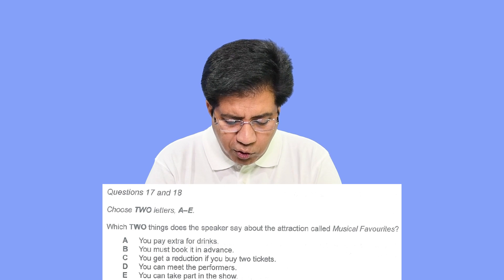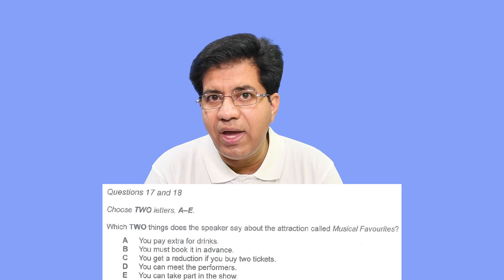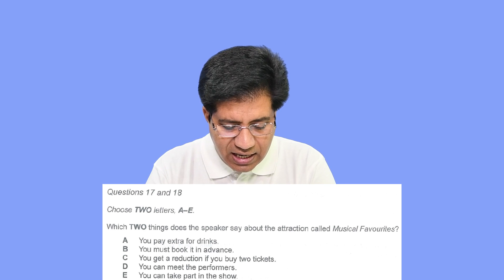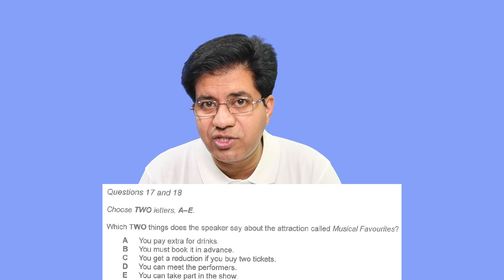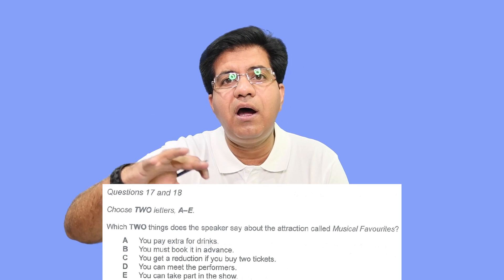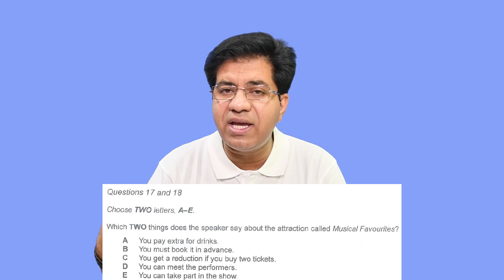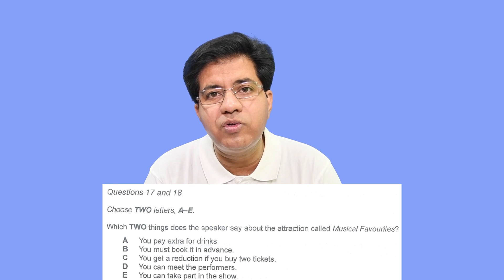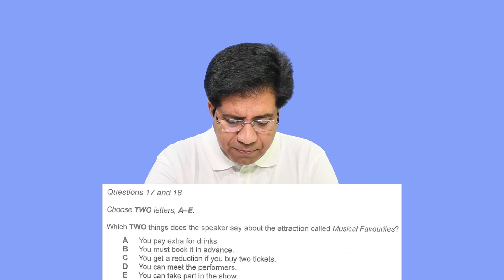For example, option A: 'you pay extra for drinks.' Now if in the audio they say you have to pay a little charge for the drinks, then A is the right answer. But if they say drinks are absolutely free of cost, then 'pay extra for drinks' and 'drinks are free of cost' are two opposite phrases. The opposite phrase is a trap — you need to cross those options out.